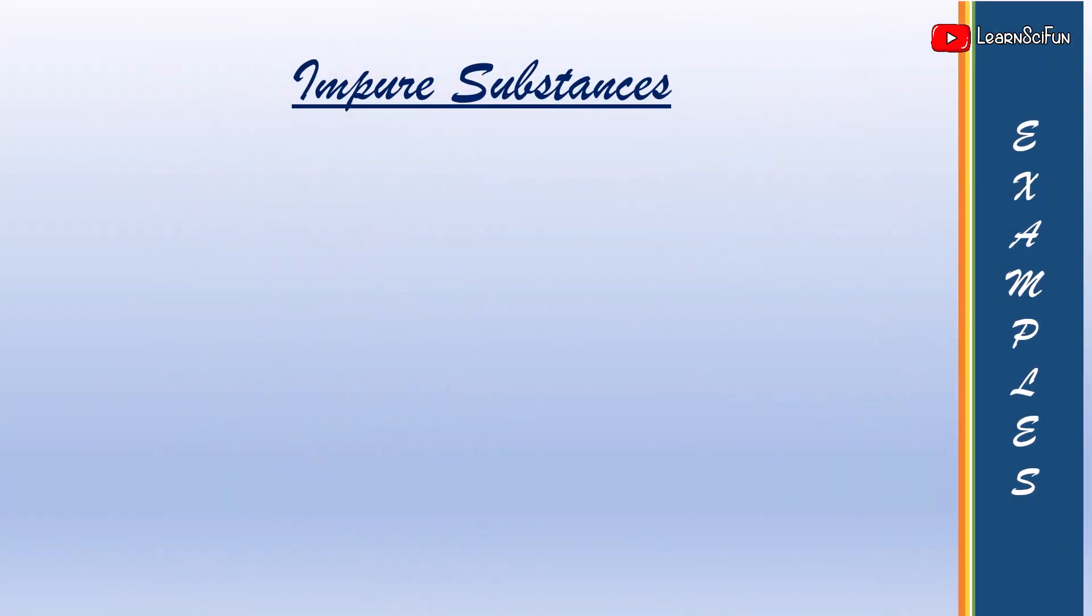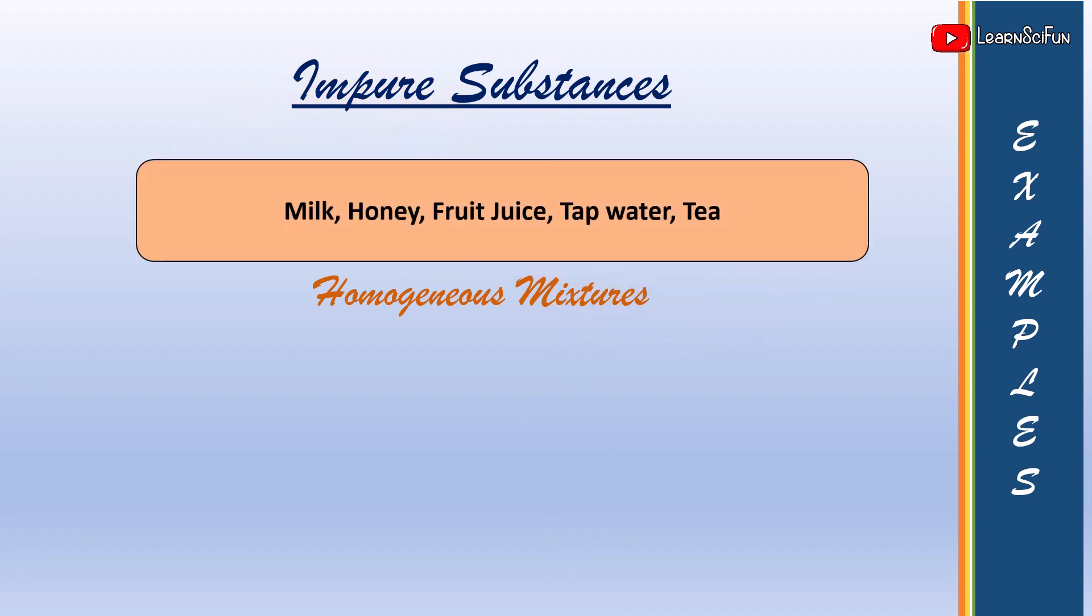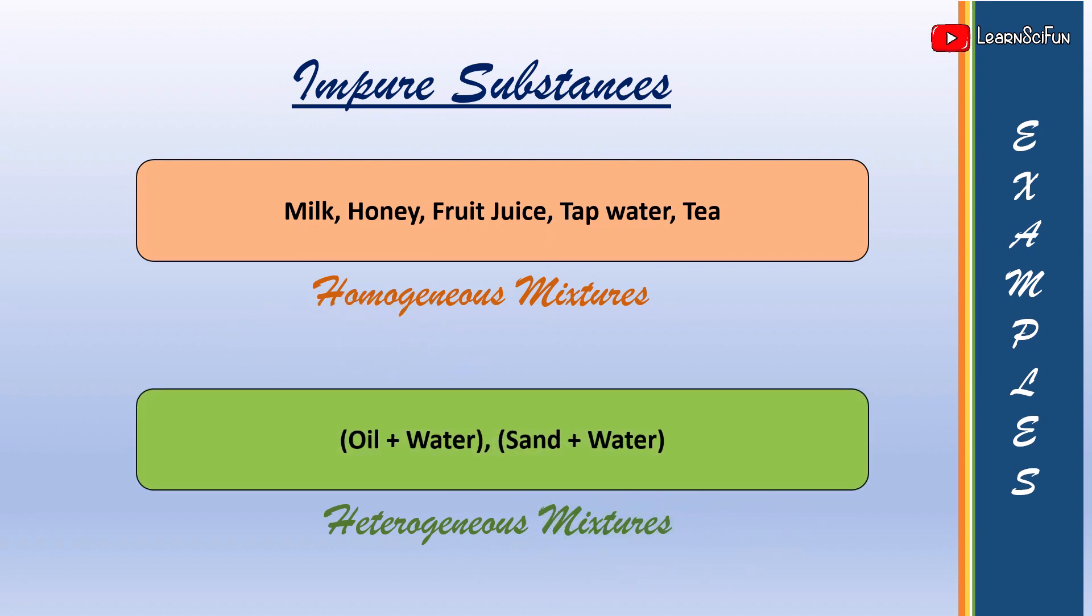Examples of impure substances are milk, honey, juice, tap water which are all homogeneous mixtures. Also the mixture of oil and water or sand in water is an example of impure substances as these are heterogeneous mixtures.